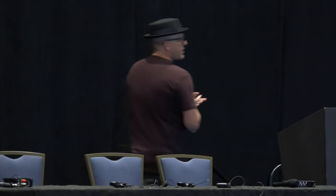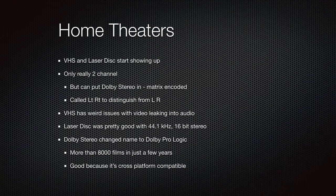Then in the eighties and early nineties, VHS and Laserdisc show up, which are really pretty much only stereo two-channel, but they do have the Dolby Stereo encoded in there. At that point they renamed it Dolby Pro Logic, which is still the same thing. You can still see Dolby Pro Logic on any receiver. It's still used a lot — mostly in broadcast — and we call it LTRT instead of left and right, meaning it's a matrix-encoded surround system.